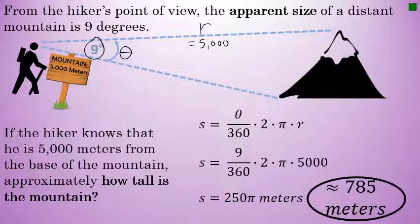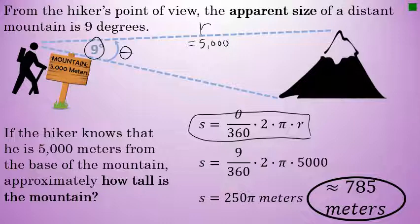In conclusion, if you know the apparent size of a distant object and you know the distance from the observer to the object, you can represent the situation as a sector of a circle and approximate the actual size of the object using the arc length formula. In our situation, if a hiker sees a distant mountain whose apparent size is 9 degrees and the hiker is known to be 5,000 meters from the mountain, we can say that that mountain is approximately 785 meters tall.